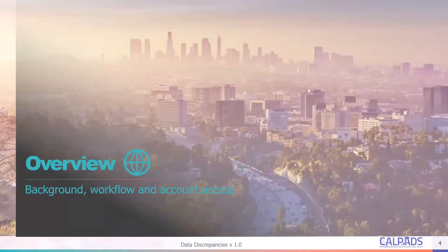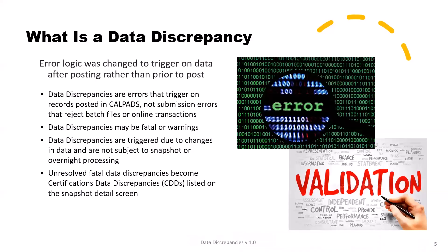Now we're ready for the overview. We will have a brief discussion, offer some background, look at the workflow, and talk about account access. Central to understanding functionality is understanding the reason for, or in this case, what is a data discrepancy.